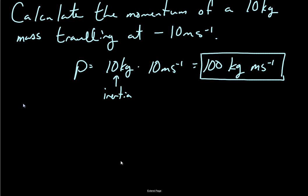So why is momentum useful? On its own, knowing an object's momentum as a number value doesn't really do a whole lot. You wouldn't often hear anyone say that a football player has 2,000 kilogram meters per second worth of momentum. But where it does become important is in the concept of conservation of momentum, which we'll get to in just a second.